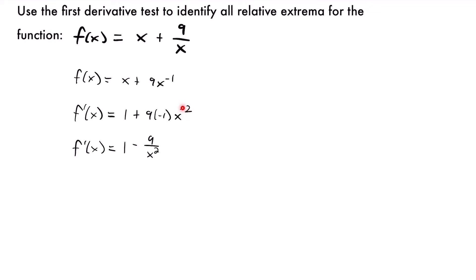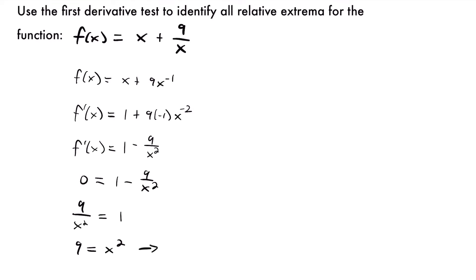We just moved the variable with a negative exponent to the denominator, giving us 9 over x squared. Now if we set this equal to 0 and solve for our critical values: 0 equals 1 minus 9 over x squared. Adding 9 over x squared to both sides gives 9 over x squared equals 1. Multiplying both sides by x squared gives 9 equals x squared. Taking the square root gives x equals plus or minus 3. So we have two critical values: positive 3 and negative 3.